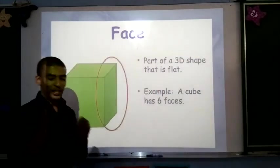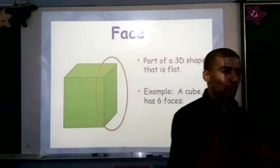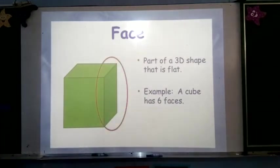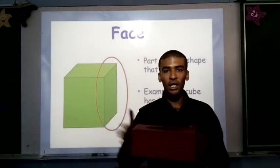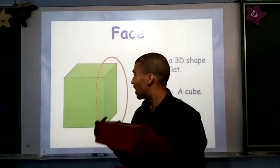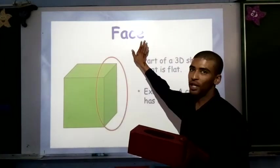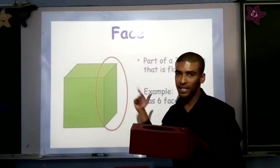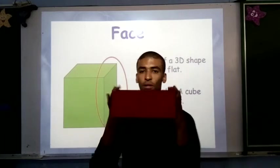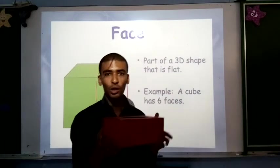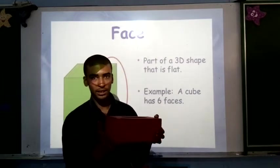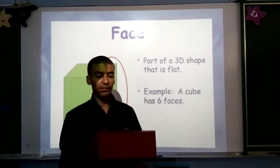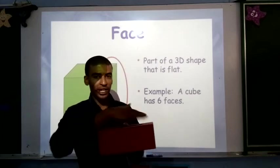Now, what we're going to be looking at are different aspects within our 3D shape. So if I had to take, for example, my tissue box, and we had to look at the different parts of our shape, we want to ask ourselves the following thing. How many faces does the shape have, and what shape are the faces? So if we look at my tissue box, we ask ourselves, what shape is this? It is a rectangular prism. Correct. Now, we ask ourselves, how many faces does our rectangular prism have?